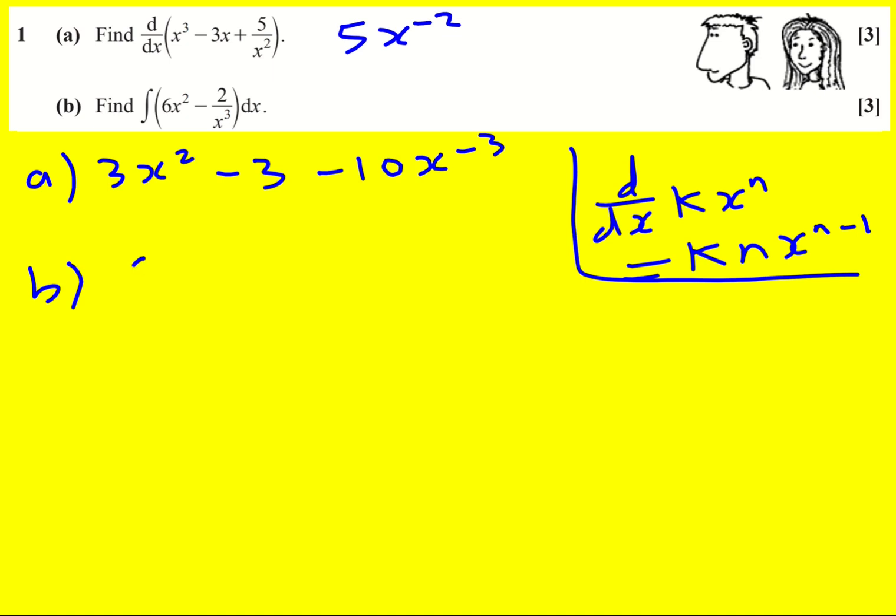For part b, I'm going to integrate 6x squared minus 2x to the minus three with respect to x. Now I've got a rule for integration as well.